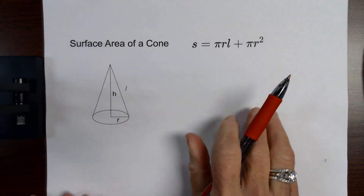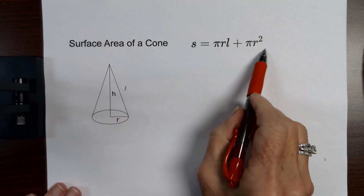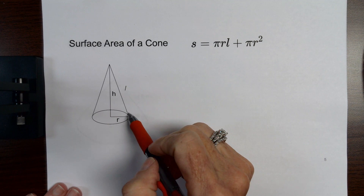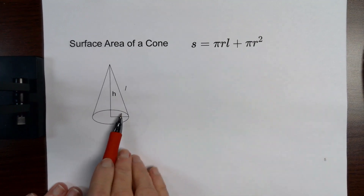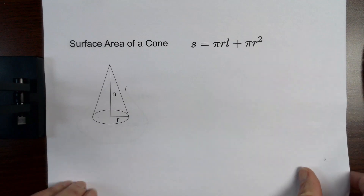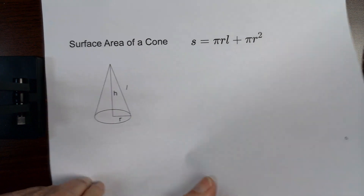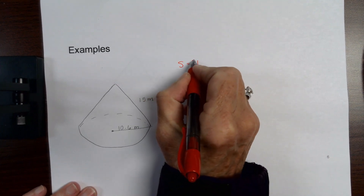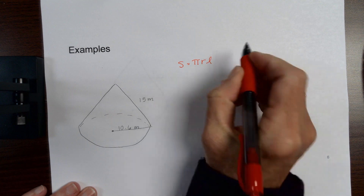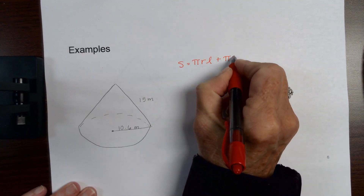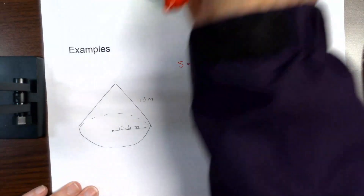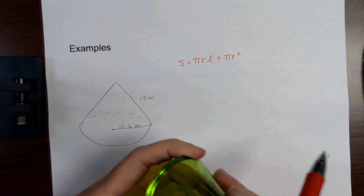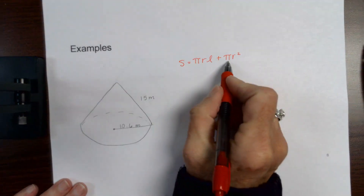The last one we have is the surface area of a cone. The formula is: pi times the radius times the slant height (L) — same slant height concept as the pyramid — plus the area of the base, which is pi r squared. Think of it like an ice cream cone: you have a circular base plus the curved surface all the way around.